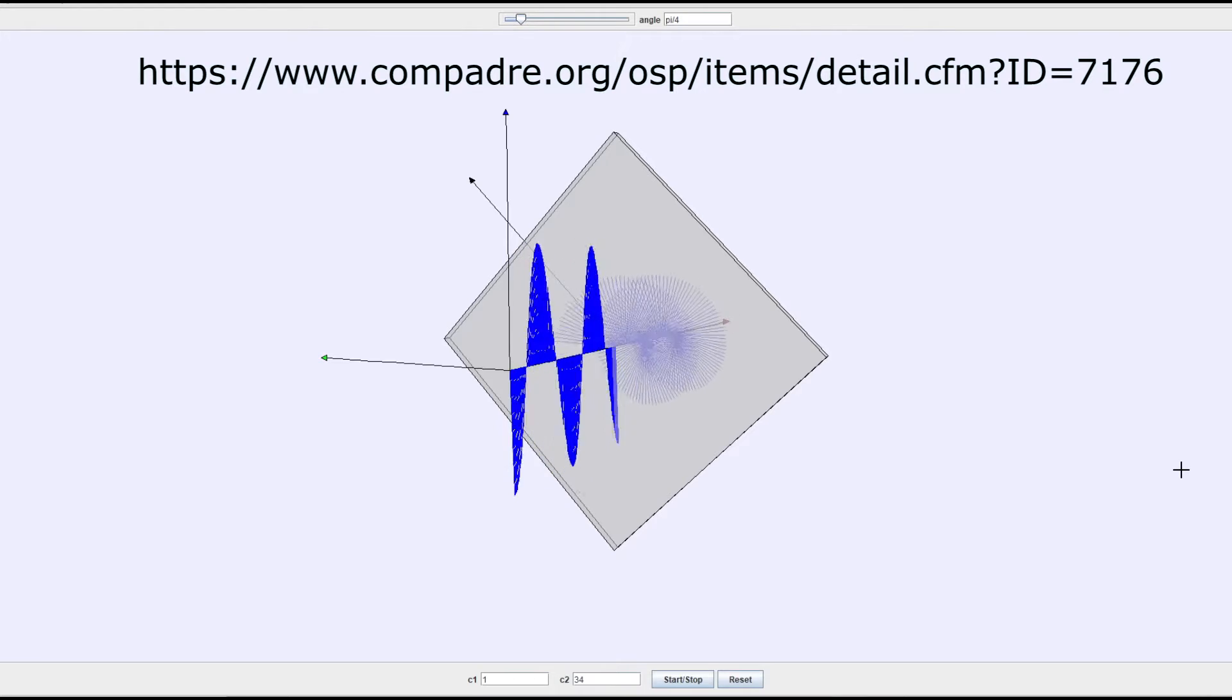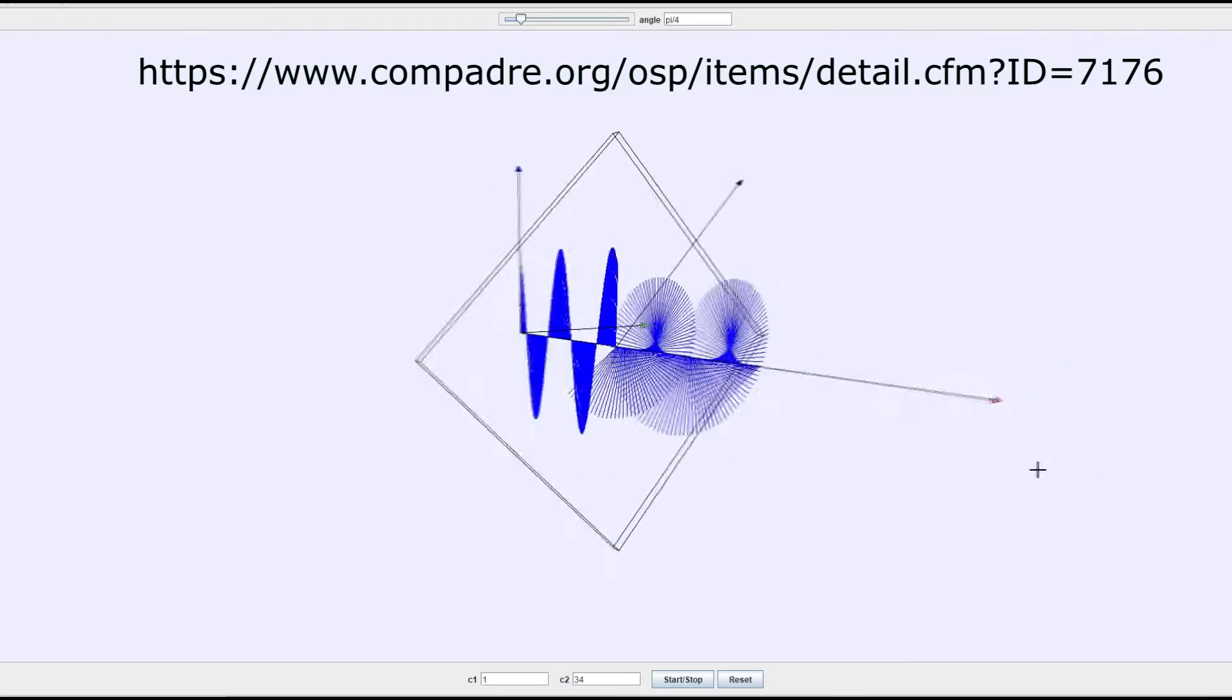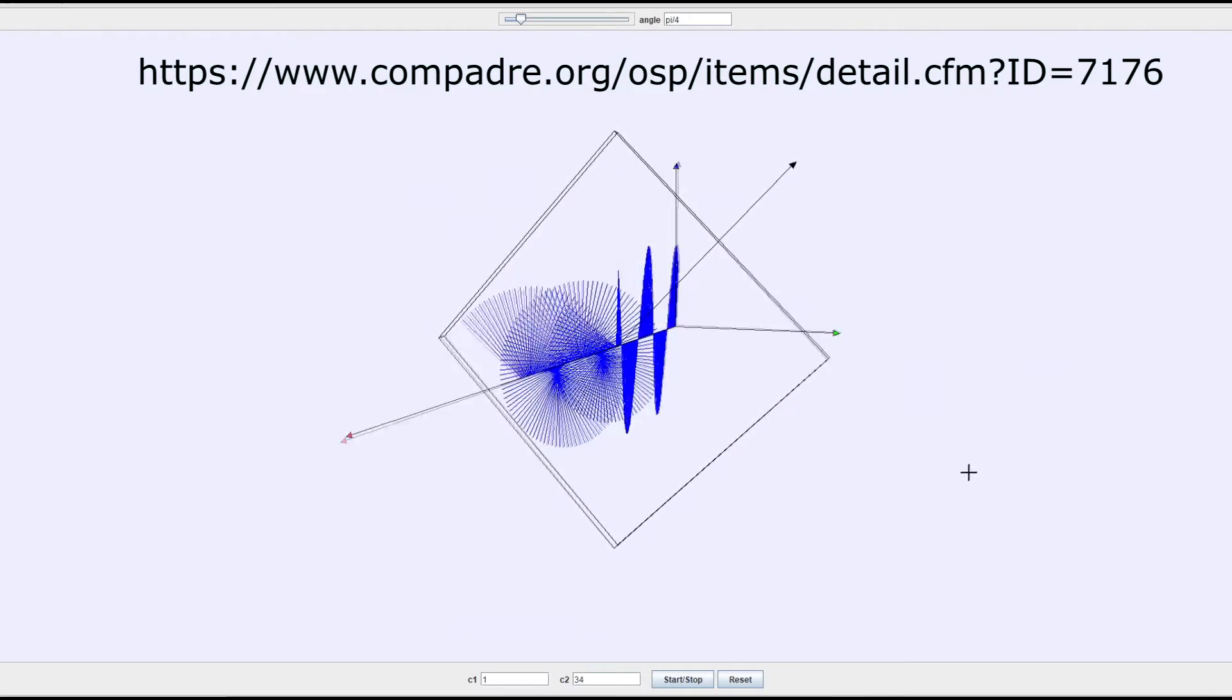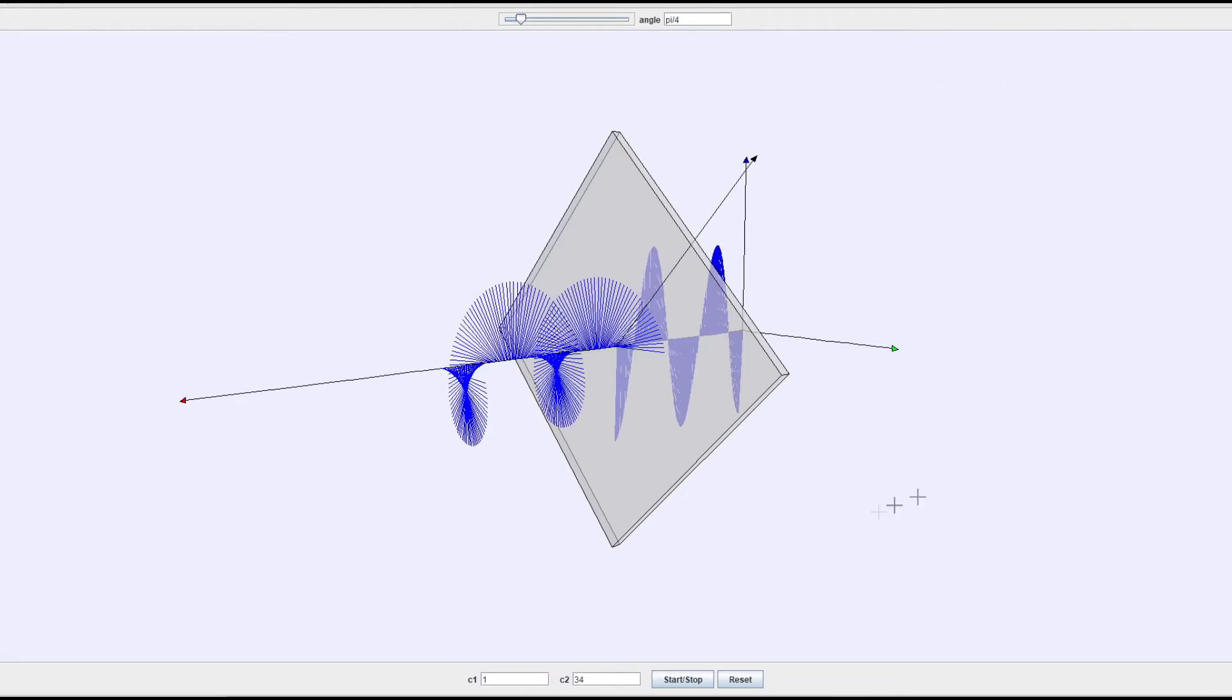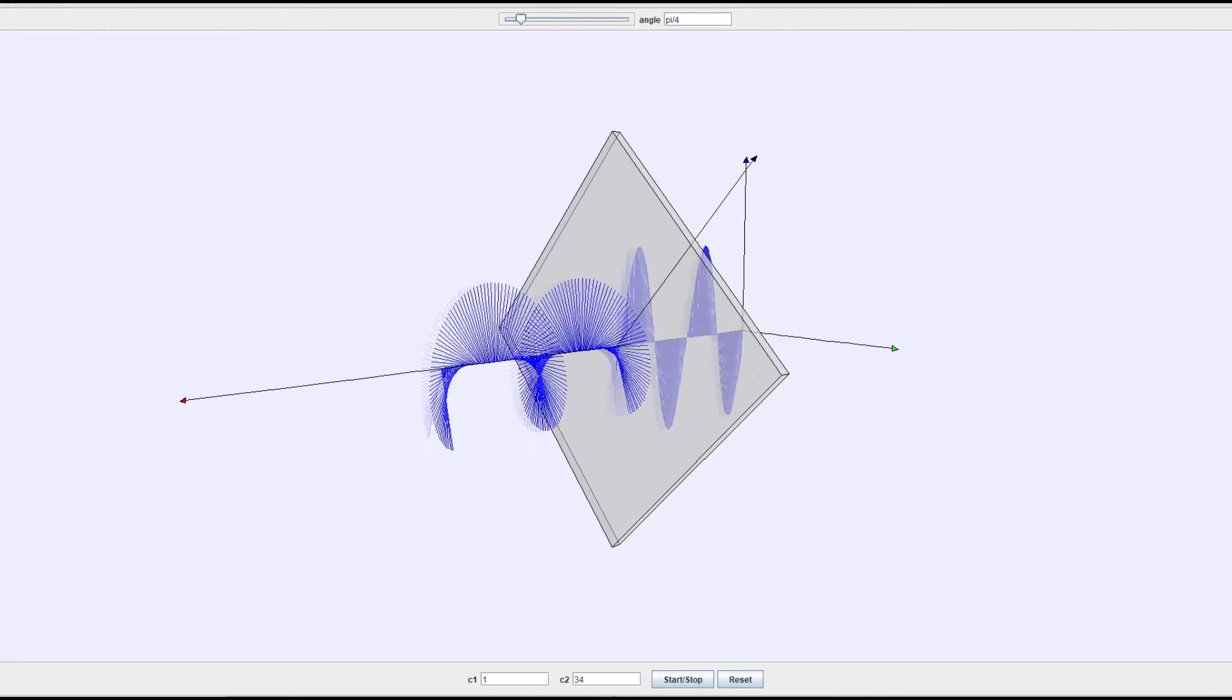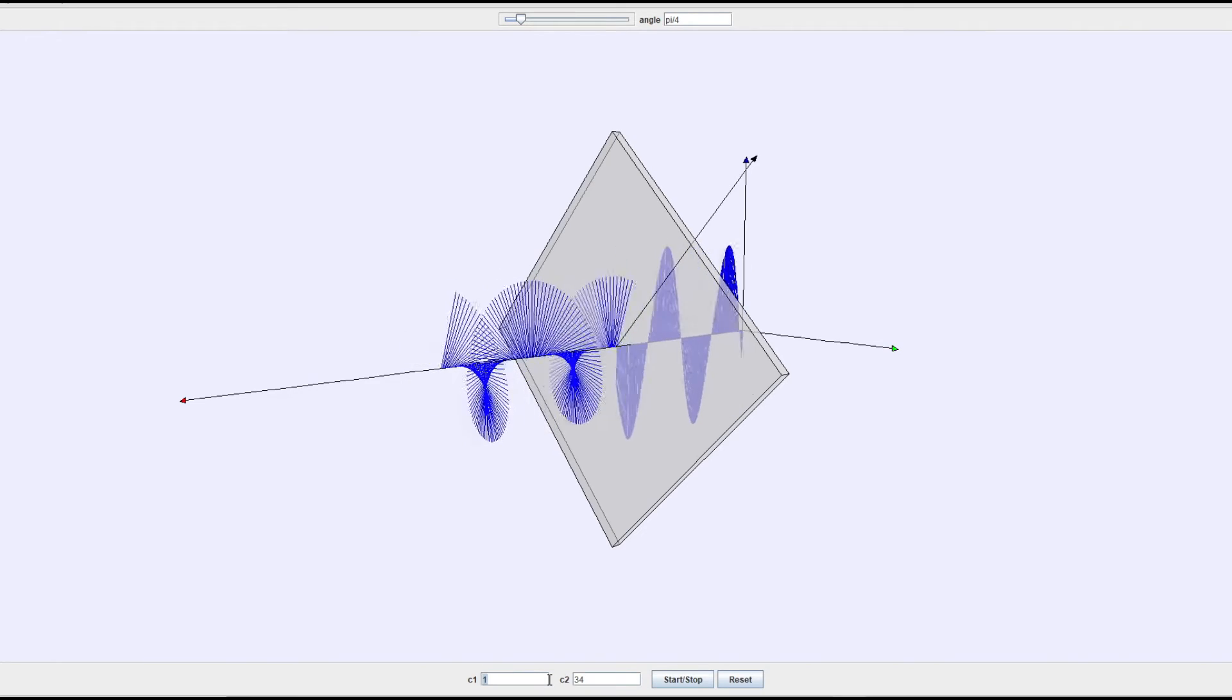In this simulation the incident light is linearly polarized, but unpolarized light would behave similarly. The incoming linearly polarized light, when passing through the quarter wave plate, becomes circularly polarized due to a 90 degree phase shift.